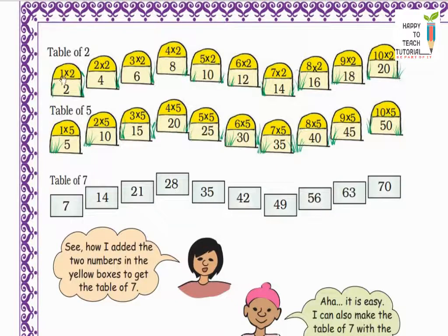First she wrote the table of 2: 2×1=2, 2×2=4, 2×3=6, 2×4=8, 2×5=10, 2×6=12, 2×7=14, 2×8=16, 2×9=18, 2×10=20. Then she wrote the table of 5: 5×1=5, 5×2=10, 5×3=15, 5×4=20, 5×5=25, 5×6=30, 5×7=35, 5×8=40, 5×9=45, 5×10=50. Now what did she do? She added the values she got. So 2+5=7, 4+10=14, 6+15=21, 8+20=28, 10+25=35, 12+30=42, 14+35=49, 16+40=56, 18+45=63, and 20+50=70. So this way the table of 7 is ready.